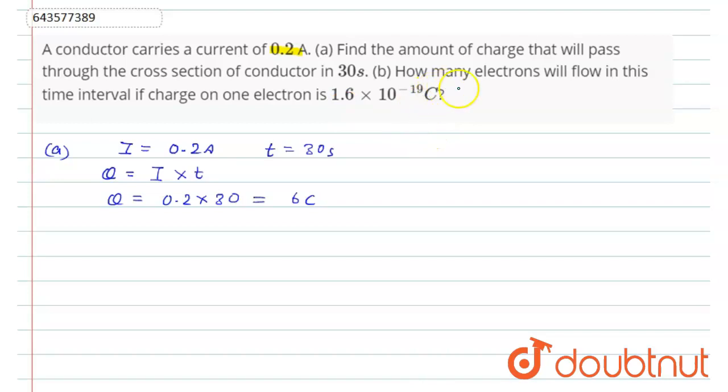Part B: How many electrons will flow in this time interval if charge on one electron is this? See friend, as we know that charge of one electron is 1.6 × 10^-19 coulomb and total charge is this.